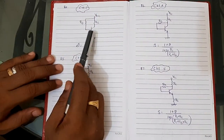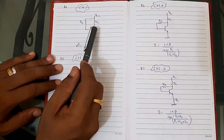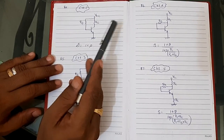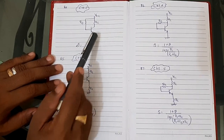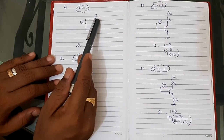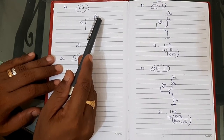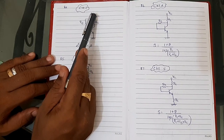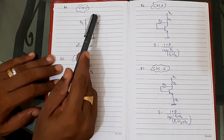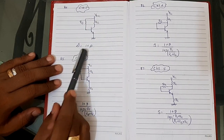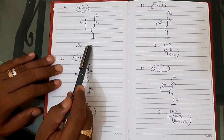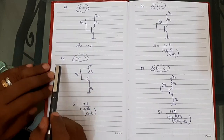For Circuit 2 (resistor connected from VCC to the base, no emitter resistor, with RC from VCC to collector): Stability S = 1 + β.